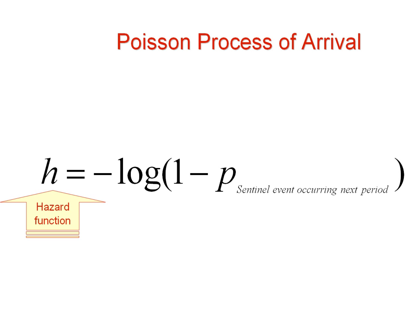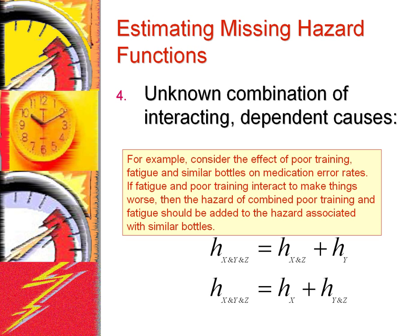Since the effects of multiple causes can be counted and added together, this interpretation allows us to add and subtract hazard rates to estimate the effects of multiple causes and constraints. For example, if poor training and fatigue interact to increase medication error rates, then the combined hazard should be used. So if we want to estimate the effect of poor training, fatigue, and similar factors, the combined hazard rate equals the hazard of poor training plus the hazard of fatigue plus the hazard associated with similar factors.